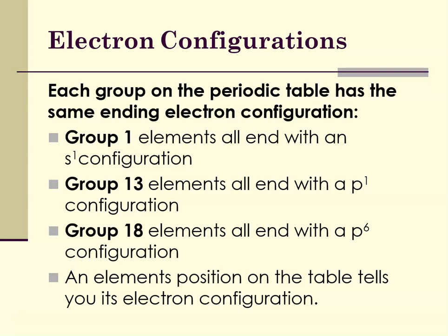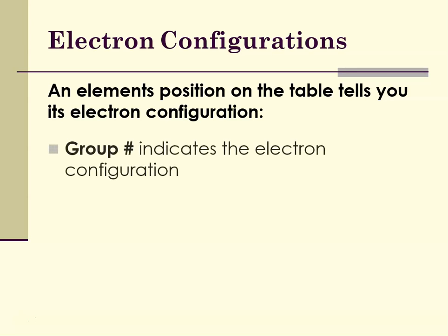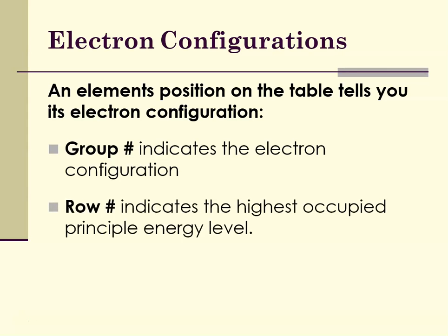Learning to read the periodic table will help you through this year. If you understand how it's set up, you can figure out whether something is going to react or not, because you know its electron configuration. An element's position on the table tells you its electron configuration — the group number tells you what the electron configuration is and whether it's in the S block, the P block, etc. The row number indicates the highest occupied principal energy level.